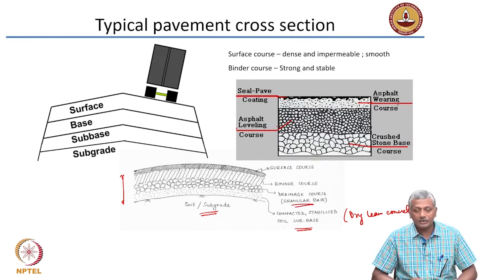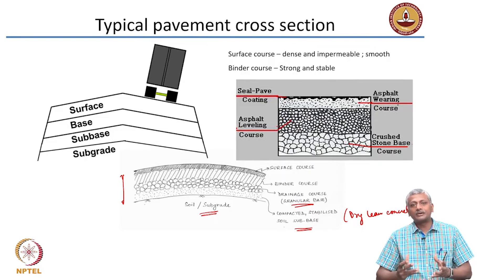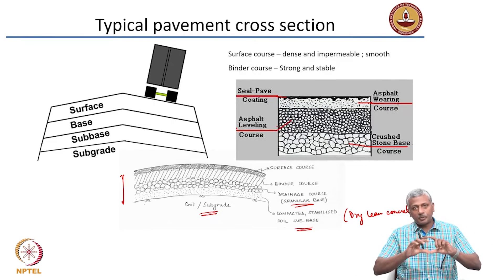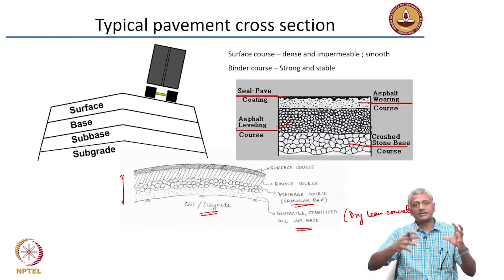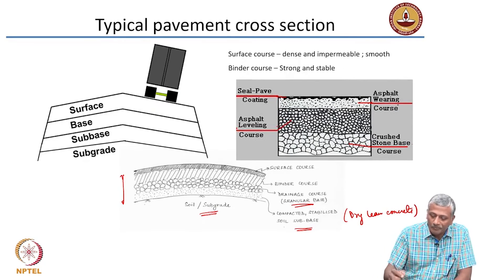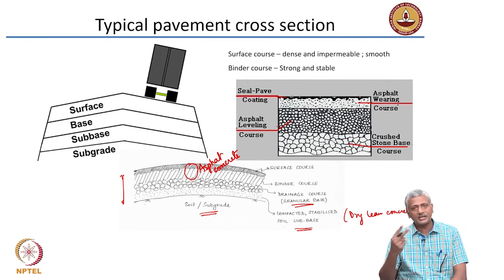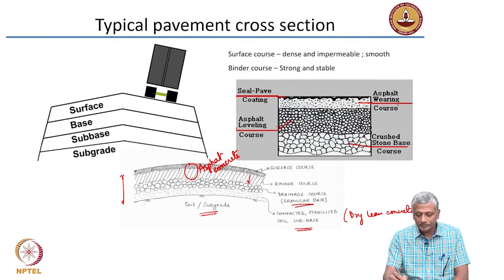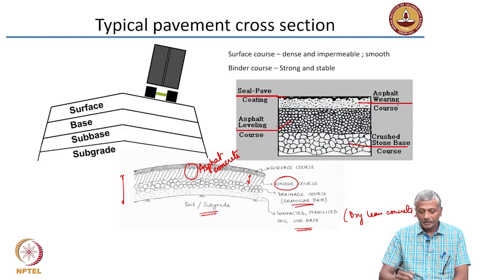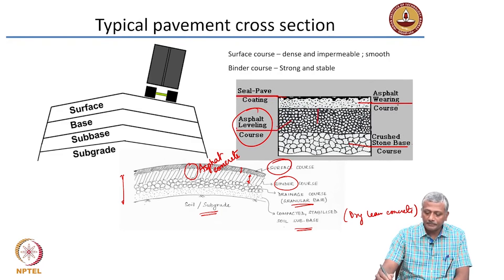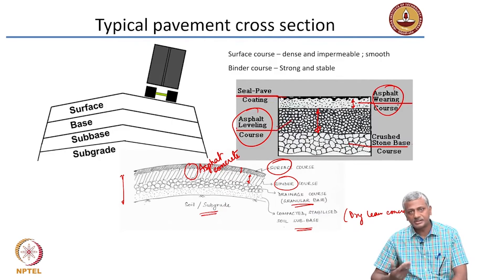On top of the sub-base, you have a drainage course or granular base course, which enables proper load distribution and drainage of any moisture entering the pavement through granular materials compacted together — there is no cementing agent inside. Above this is the asphalt concrete, typically in two layers. The lower, thicker layer is called the binder course or asphalt leveling course, and the thinner top layer is called the surface course or asphalt wearing course.